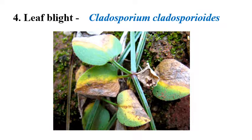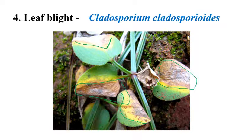The next disease is leaf blight caused by Cladosporium cladosporioides. Blighting of the leaf can clearly be seen — one side of the leaf is completely blighted, with brown color discoloration surrounded by a yellow halo on the margins of the blighted part. The key diagnostic difference is that in leaf blight, the whole leaf becomes blighted, whereas in leaf spot, only individual spots appear.